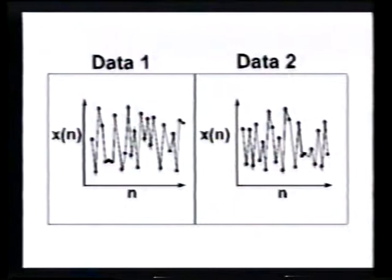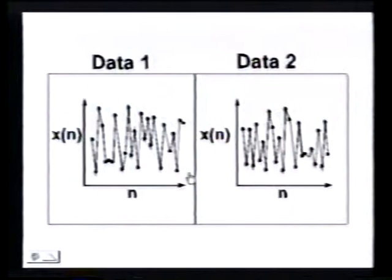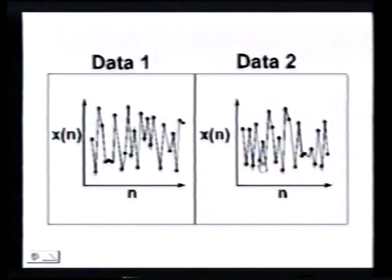What we see in this picture are two data sets, labeled 1 and 2. I've plotted the value of x at a given index number — the first point, second point, third — and connected the points by lines. These two data sets are not exactly the same sequence of numbers, but they have sort of the same characteristics — roughly a random variation from one point to the next.